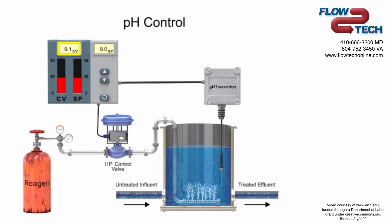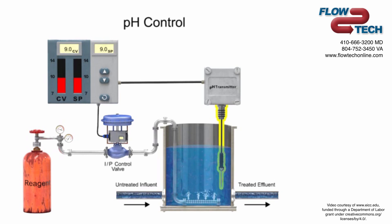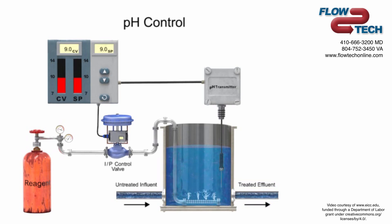Reaching the setpoint, the carbon dioxide flow is minimized and the process is continually monitored for variation. The effluent is the treated water that is discharged out of the tank. The process continues to provide the lime-softened water at the desired pH level.